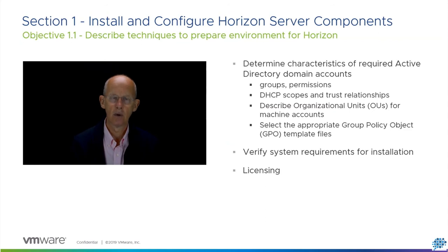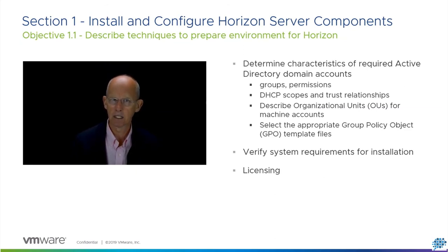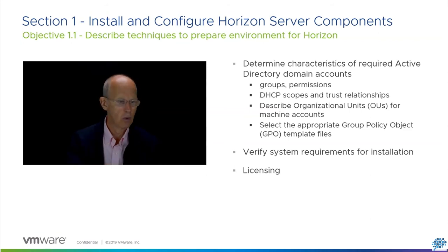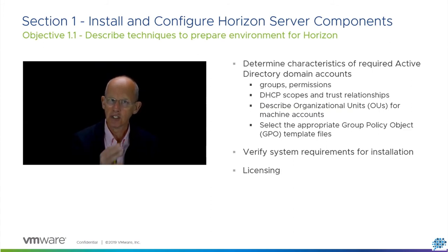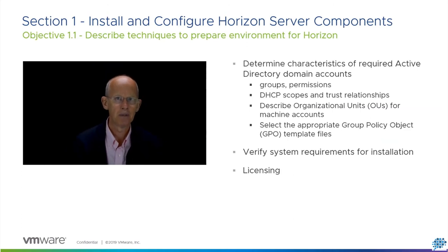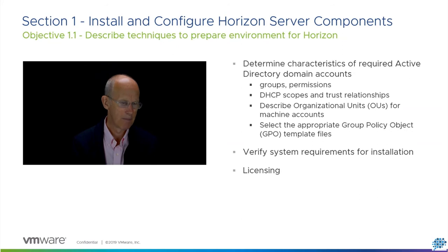When we start to think about the installation of Horizon, we need to think about what the prerequisites are. You're going to be expected to understand the integration with Active Directory — things like domains and groups, roles, and permissions. You're also going to be expected to understand the network settings: how DHCP is going to figure in this and what configuration you'll need for that. Also the suggested structure for organisational units — for example, you might be asked about kiosk desktops, which have a special suggestion for organisational units.